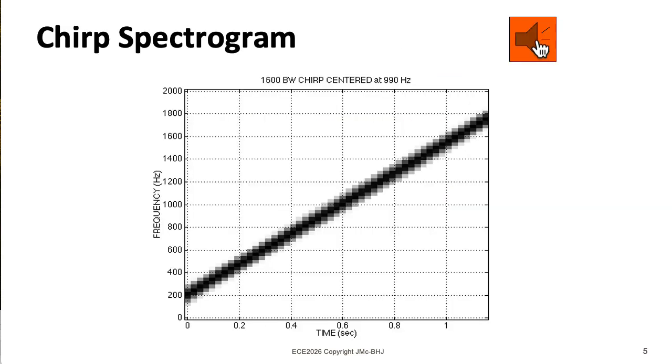Here's an example of an upward going chirp along with its spectrogram. Its instantaneous frequency runs from 200 hertz to 1800 hertz. An excellent exercise is to see if you can write a MATLAB function that produces that chirp.